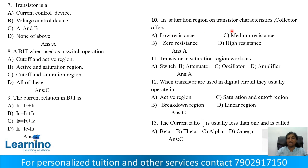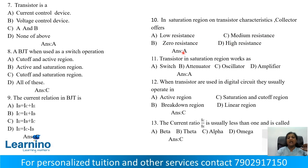Question number 11: Transistor in the saturation region works as a switch. Option A: Switch, Option B: Attenuator, Option C: Oscillator, Option D: Amplifier. In the saturation region, transistor works as a switch. Correct answer is Option A. Question number 12: A transistor used in digital circuits is usually operated as a switch — on and off.